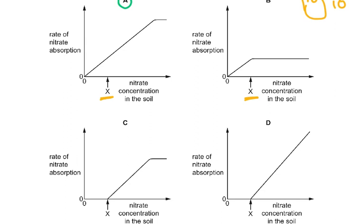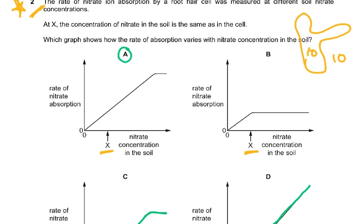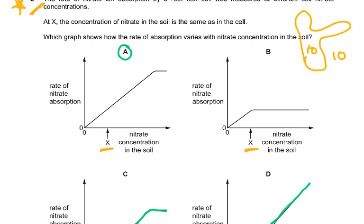Two of the graphs start the rate of nitrate absorption at point X. But the question states that at X the concentration in the soil equals that in the cell. Because active transport is involved, even if the concentration outside is lower — say five — active transport will still cause ions to enter. So absorption should have started well before X.